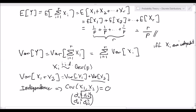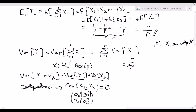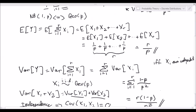So if all xi are independent, we can say the variance of the summation equals the summation of the individual variances. The variance of xi is (1−p)/p². So the total variance equals r times (1−p)/p². And that's how we derive the variance of the negative binomial distribution.